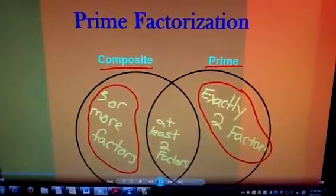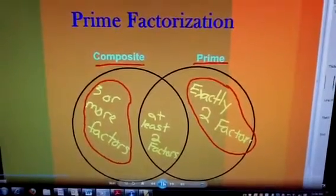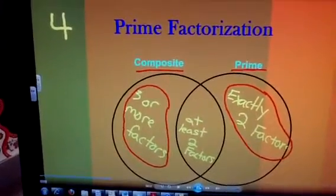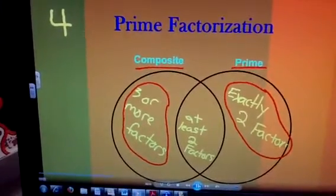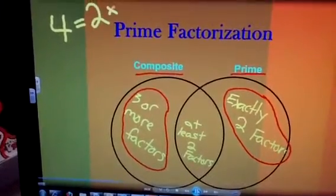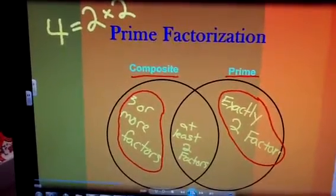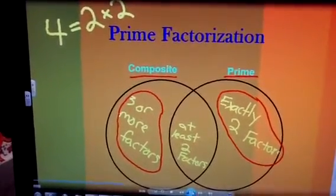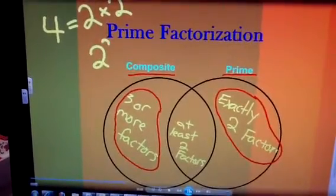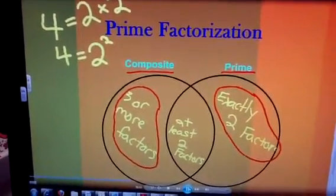So if we were to do the prime factorization of a very simple problem like the composite number four, we could break this down into two prime numbers in which this product of four is written as two times two. Both of these are prime numbers, and it could even be broken down more as an exponent if we wrote two to the second power equals the composite number four.